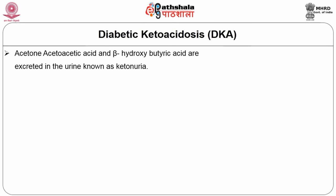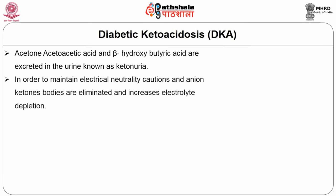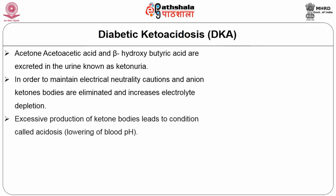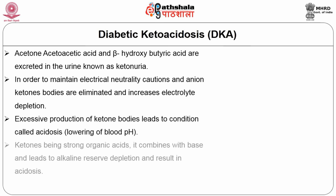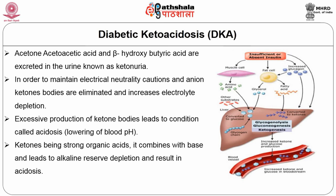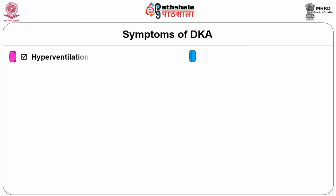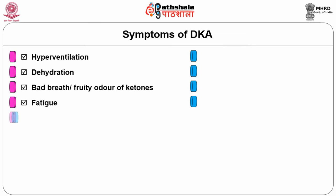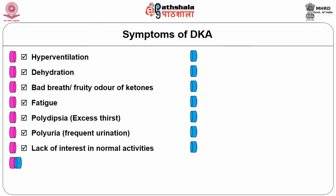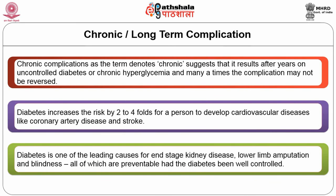Acetoacetic acid is excreted to maintain electrical neutralization, and ketone body elimination increases electrolyte depletion. Excessive production of ketone bodies leads to acidosis — the blood pH is lowered as ketones, being strong organic acids, combine with bases, depleting the alkaline reserve. Symptoms include hyperventilation, dehydration, bad breath, fatigue, excess thirst, urination, and confusion due to lack of glucose reaching cells.